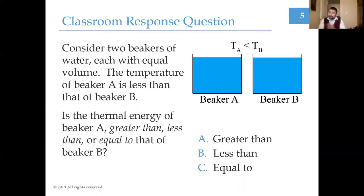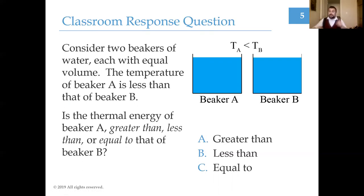Thermal energy is the sum of all kinetic energies plus potential energies. If it's the same substance and same volume, there's about the same number of molecules in both A and B, so they present with the same amount of potential energy. Temperature is a measure of kinetic energy, so if the temperature of beaker A is less, the thermal energy — the sum of kinetic and potential — must also be less.